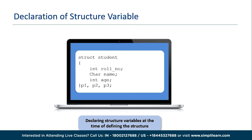Alternatively, structure variables can be declared at the end of the structure definition, right before the termination of the structure. In this case, role number, name, and age are the member functions, and p1, p2, p3 are the variables of the structure student. So that's how you can declare a structure variable.